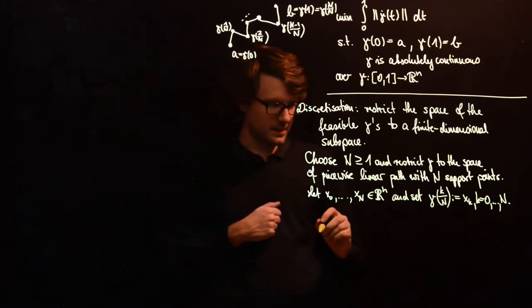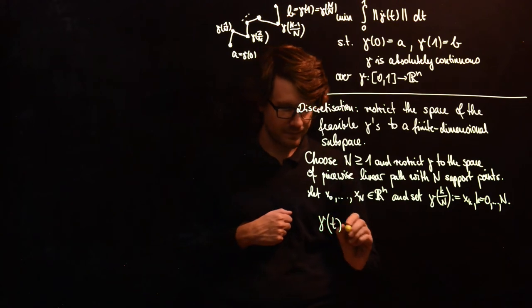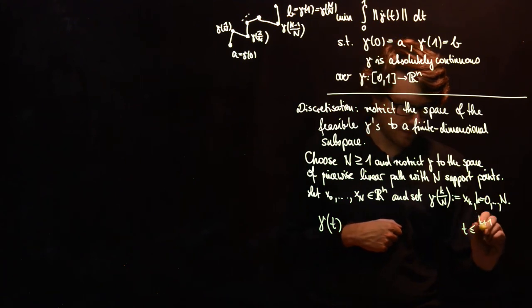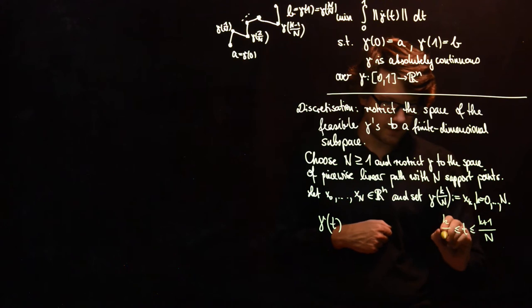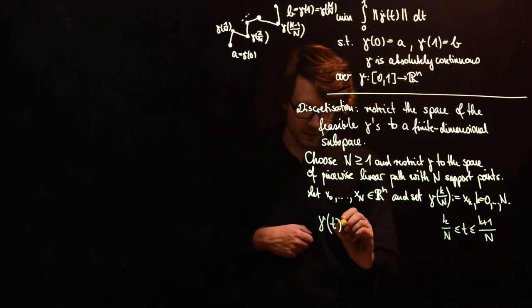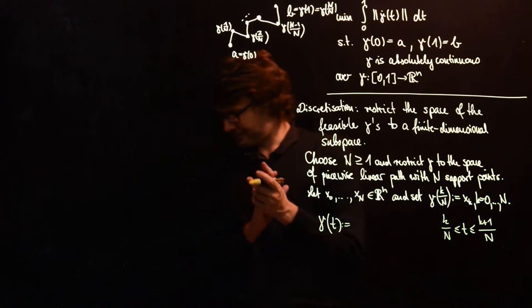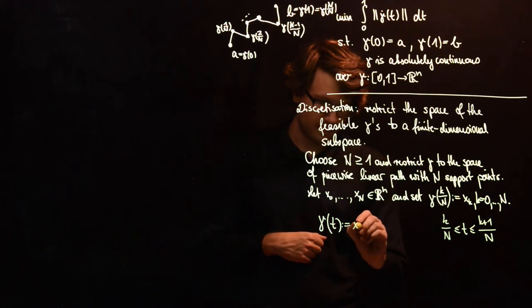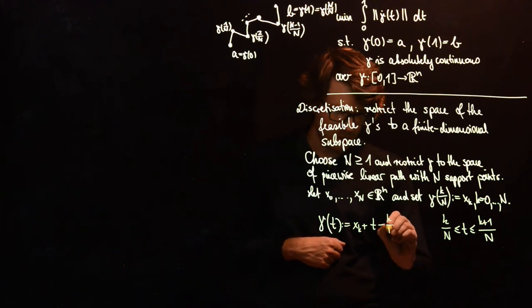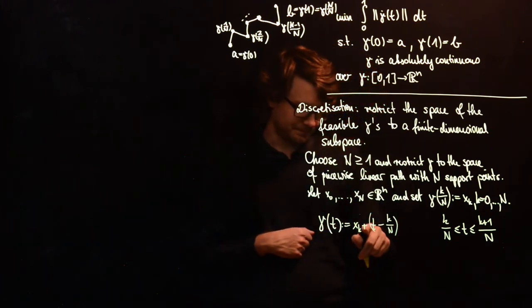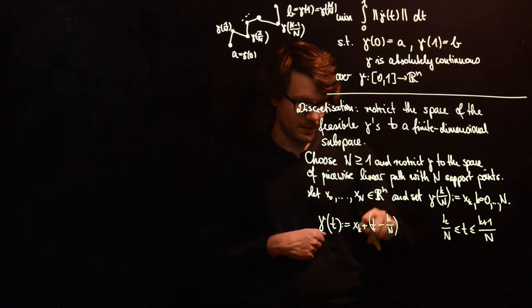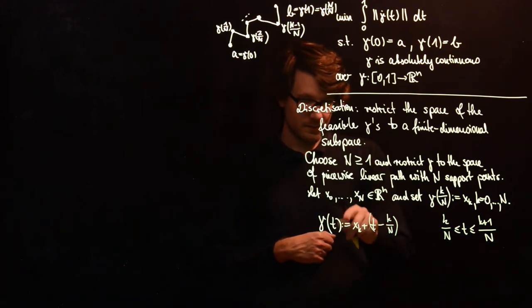And then we do a linear interpolation between those points. So we set gamma of t with t between K over N and K plus 1 over N. So we want to have xK at this end. If t is equal to K over N, then this expression in the parentheses will disappear so we have xK, that's what we want.